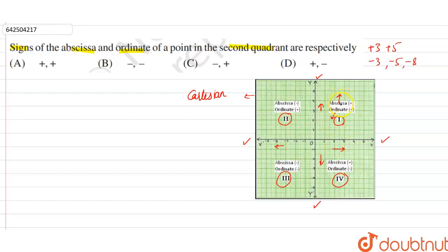Now, in first coordinate, x is positive, y is positive or abscissa and ordinate both are positive. So, we can say this is first coordinate.